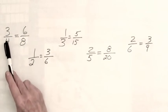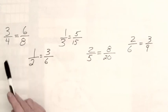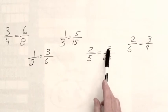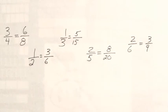In this case, numerator and denominator both multiply by two. Two-fifths is equal to eight-twentieths, the numerator multiplied by four, the denominator multiplied by four.